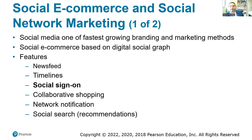Collaborative shopping is when you post on Facebook or Twitter asking for opinions about a product you're considering buying and get recommendations from others. Network notification is when you like something and your friends get notified — if you liked a builder, a friend interested in building will trust that recommendation. Social search involves reviews where consumers share praise or displeasure about a service, providing recommendations to others.